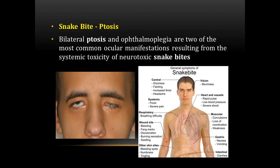Other general symptoms include dizziness, fainting, rapid pulse, low BP, severe shock, bleeding, discoloration, burning sensation, loss of coordination, weakness, numbness, tingling, bleeding spots, diarrhea, etc. In the examination, they showed the diagram of ptosis, so the correct option was ptosis.